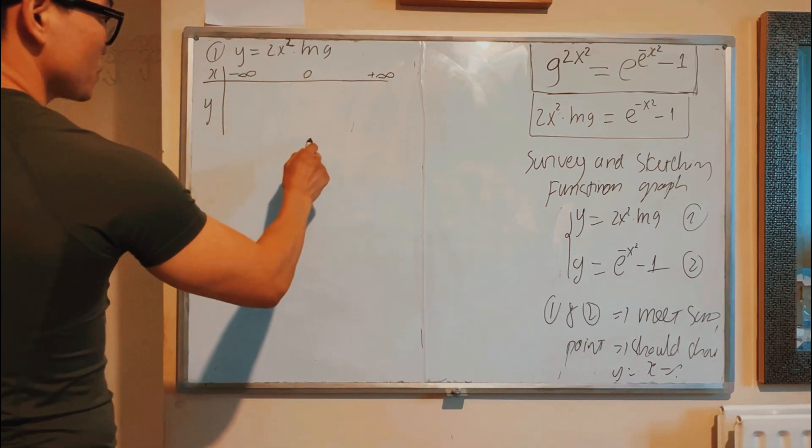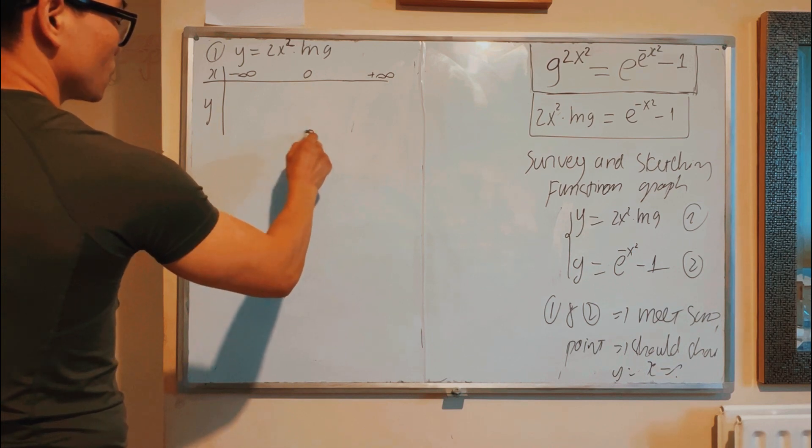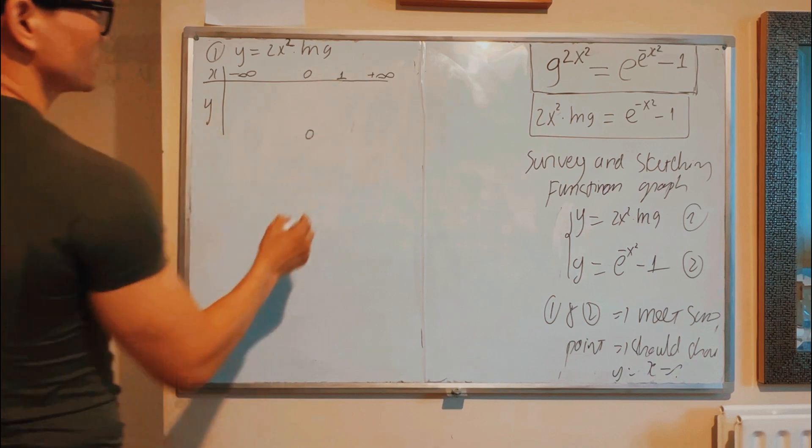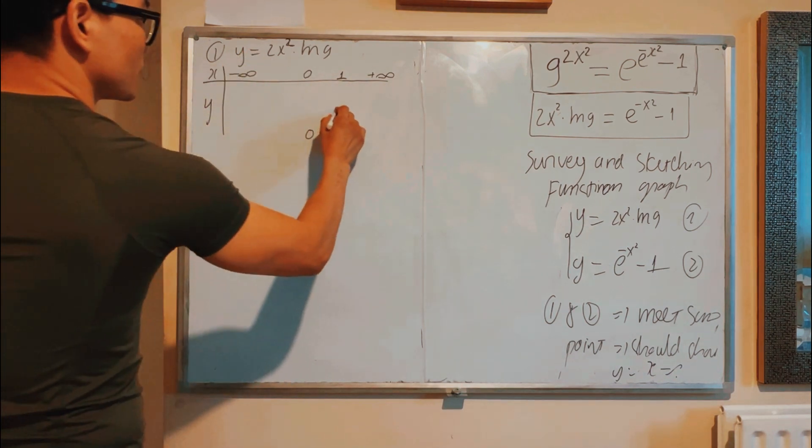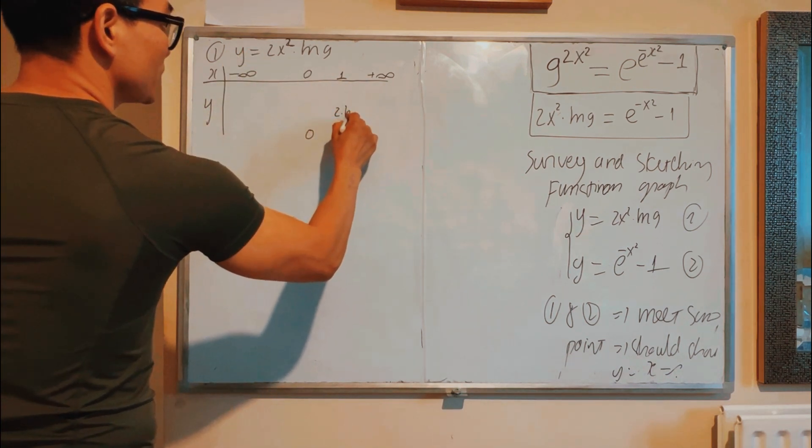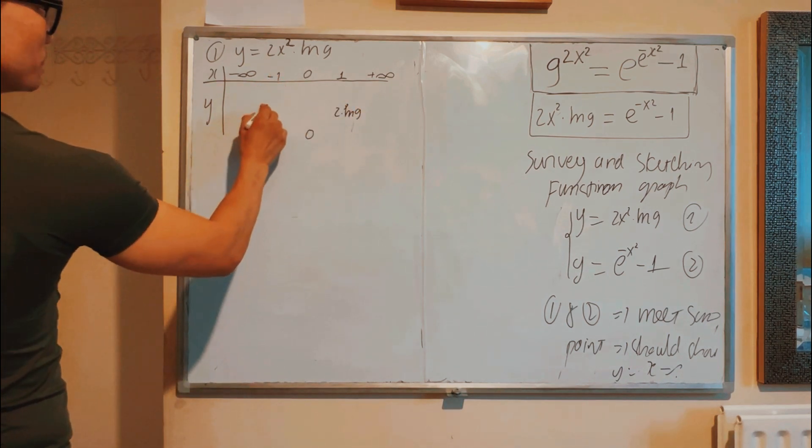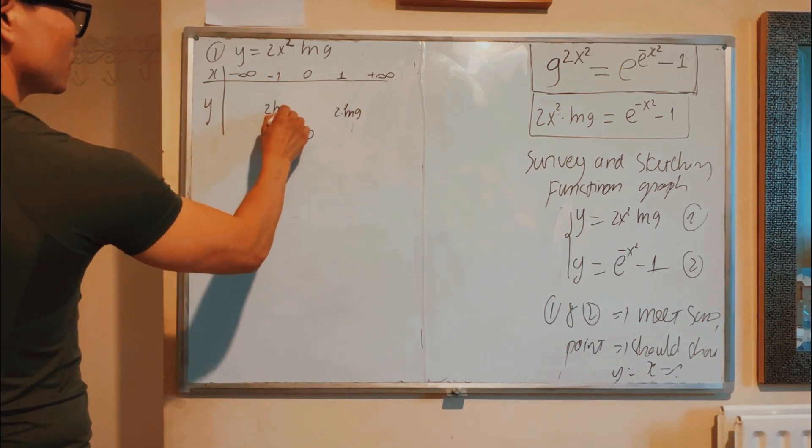So y becomes 0. If X is 1, and y is equal to 2 ln 9. Negative 1, same, 2 ln 9.